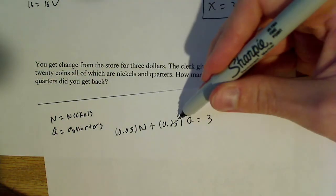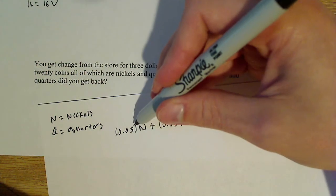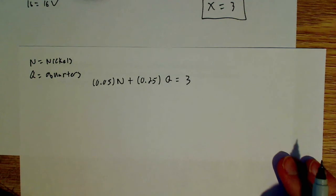That's just the number of quarters, each one's 25 cents, so the number of quarters times 0.25 and the number of nickels times 0.05 has to equal three, three dollars.